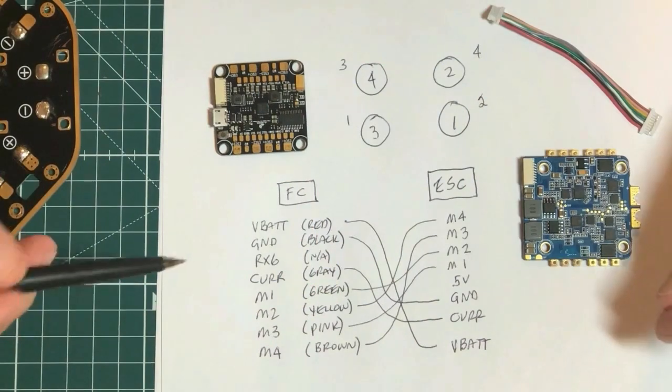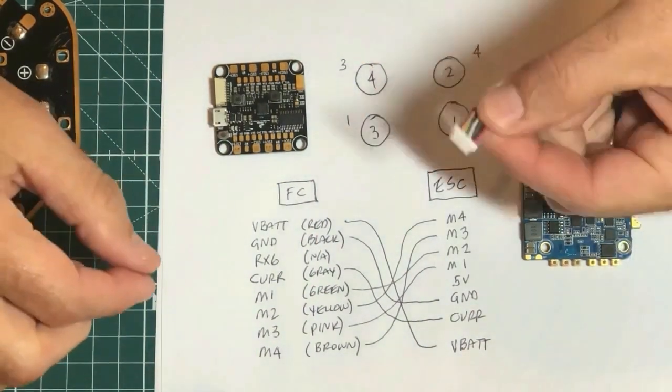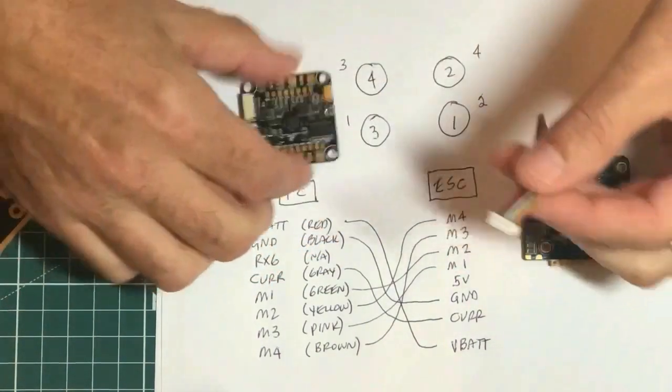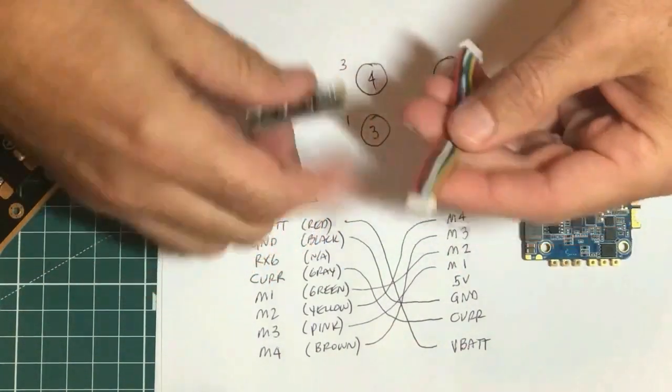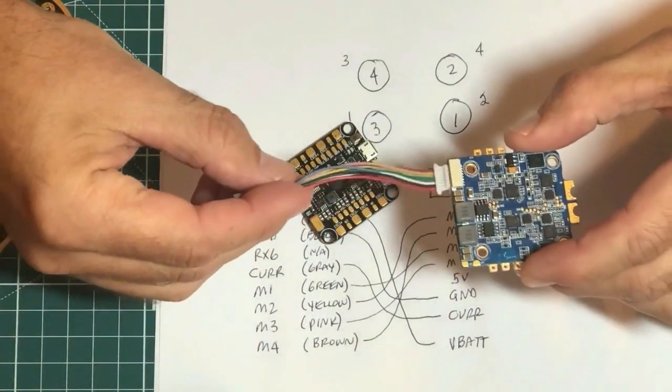Here's a very important step when I start wiring the ESC to the flight controller. I'm going to use the standard cable that came with it, but I'm going to have to move the pins around. So this is going to plug directly into the flight controller and directly into the ESC.